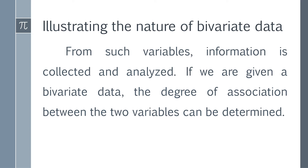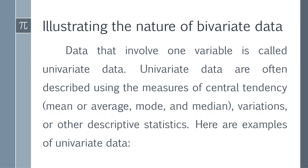When we are given bivariate data, the degree of association between two variables can be determined. Data that involves one variable is called univariate data. Univariate data are often described using measures of central tendency such as mean, median, and mode, variation or measures of dispersion, or other descriptive statistics.